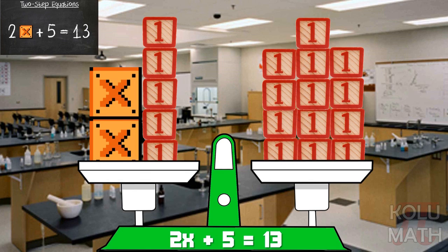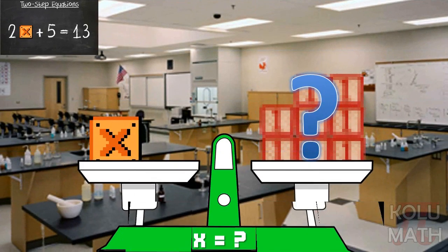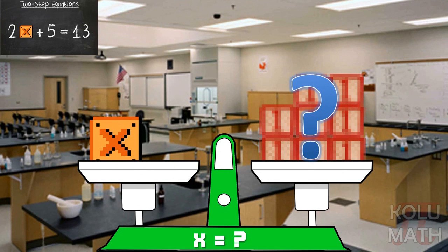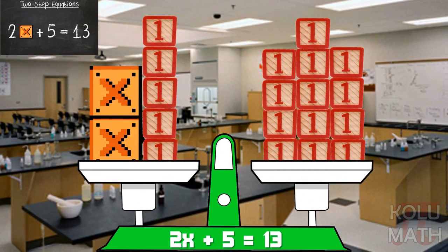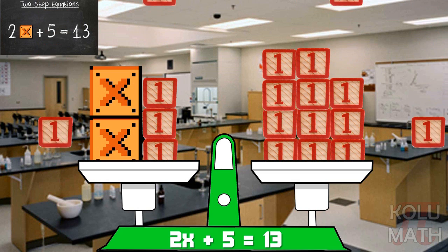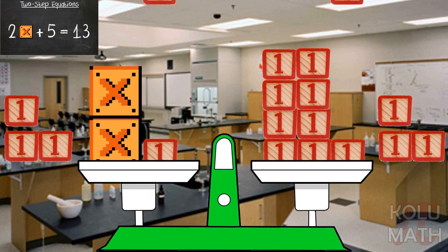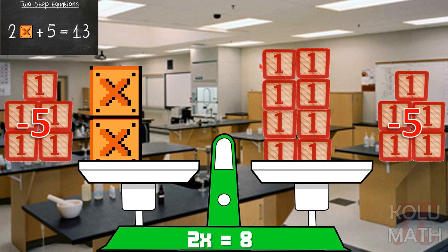How are we going to solve this? Well, ideally what I'd like is to have x on the left side there and have something else on the right. That something else on the right will tell me what that x is. So first step here, let's get rid of those ones on the left side. I'll go ahead and subtract all 5 of those ones from both sides.